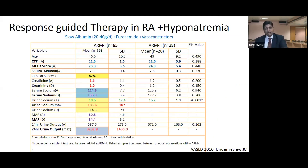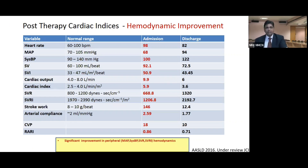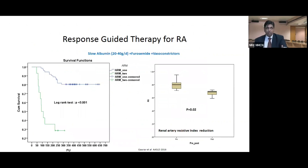For the past 9 to 10 years at SGPGI, we have used a slow albumin, furosemide, and vasoconstructor combination in a response-guided manner, targeting urine sodium greater than 80 and reduced RARI. In a study published at AASLD and under review in JCI, there was 87% clinical success in mobilization of ascites and refractory ascites with hyponatremia. Serum sodium improved from 124 to 133, urine sodium from 20 to 183, and urine output from 587 mL to more than 3.7 liters. Hemodynamic parameters — cardiac output, cardiac index, SVR, SVRI, arterial compliance, stroke volume, CVP, and RARI — all improved significantly, with significant survival advantage.